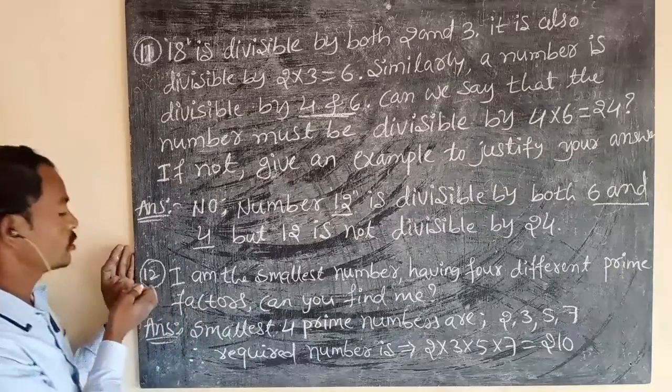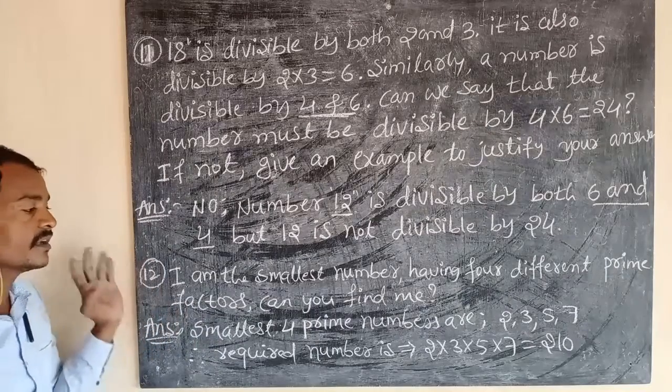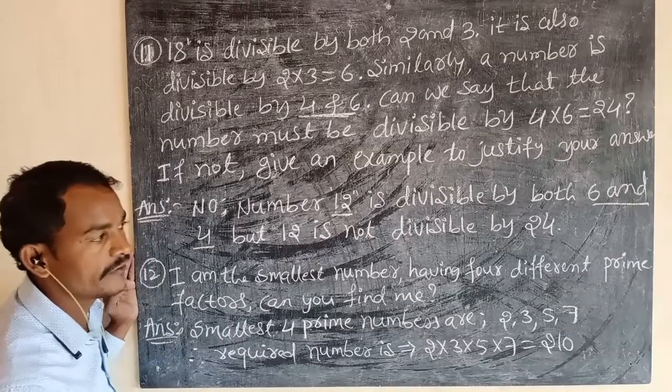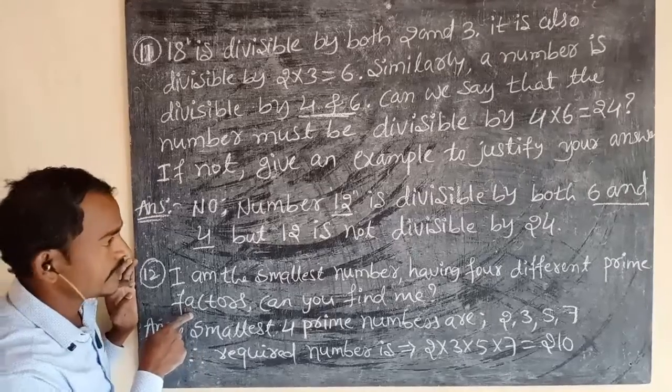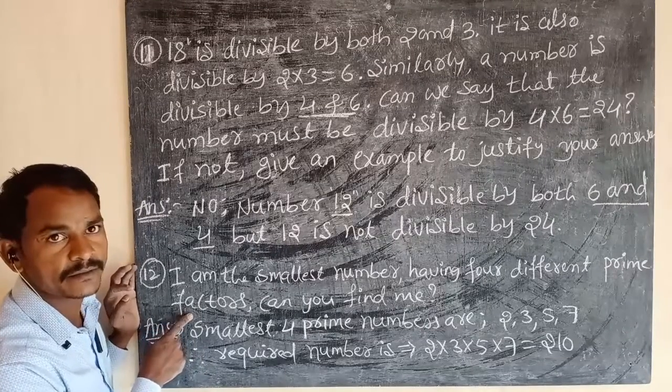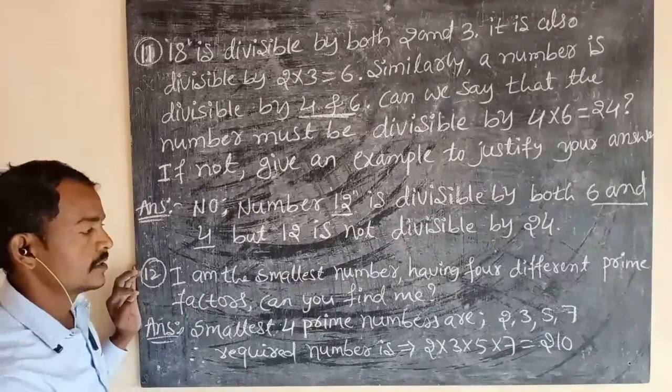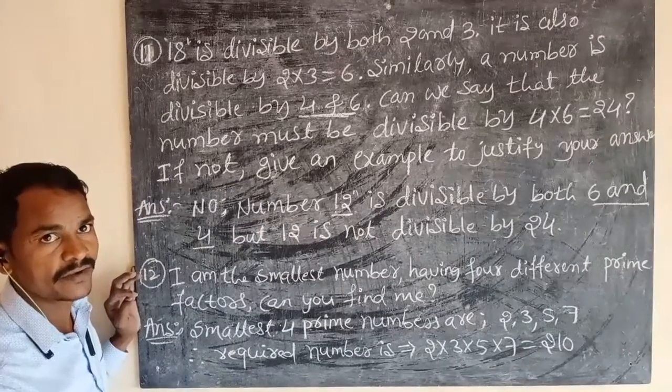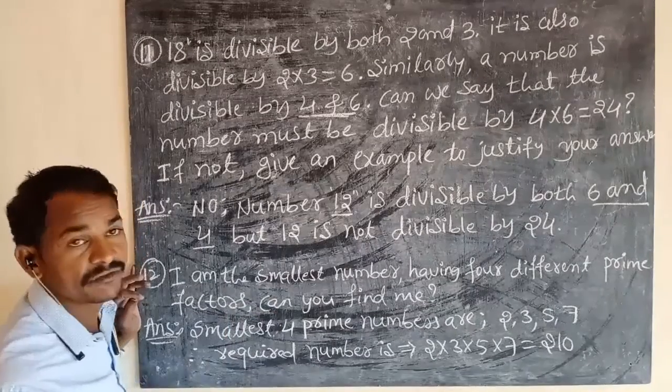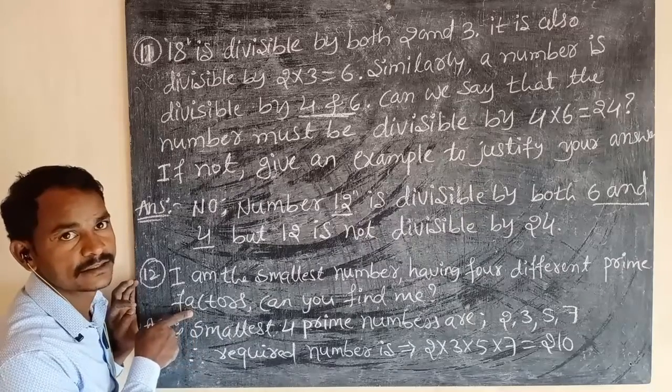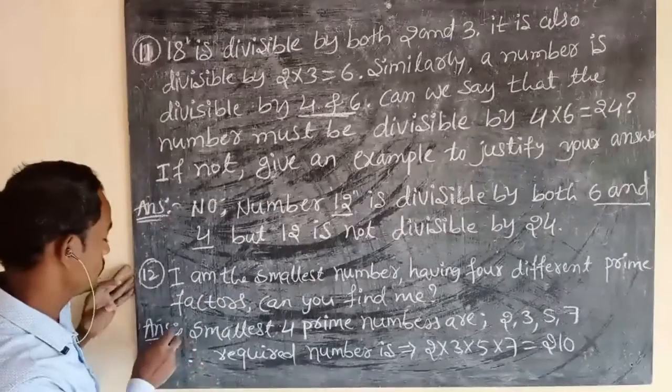Then the 12th question is: I am the smallest number having 4 different prime factors. Just you have to find who I am.